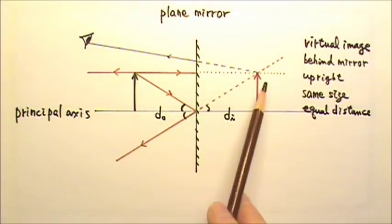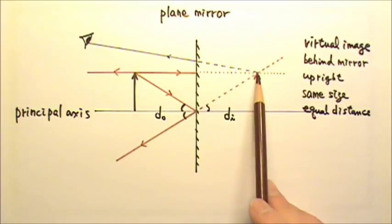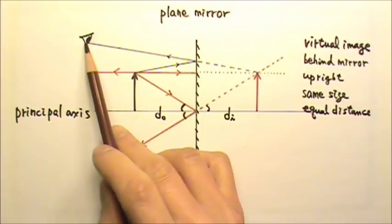Of course, this light ray does not really come from the image. It comes from this ray being reflected by the mirror.